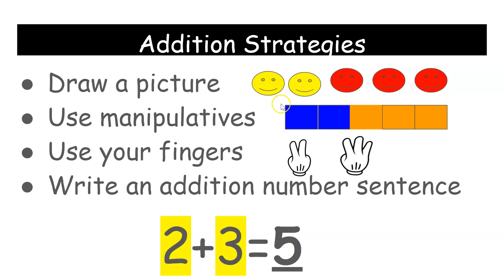Use manipulatives. So if the problem was 2+3, you would put two of one color, three of another to solve the problem. Use your fingers. Put up two fingers and three more. How many do you have altogether? And then finally, writing that number sentence or equation. This is 2+3=5.